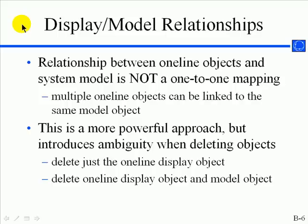Even within a single one-line diagram, the relationship between the objects you see — like buses and transmission lines — is not necessarily a one-to-one mapping to the underlying system model. You can have multiple objects on the one-line linked to a single object in the system model. This is a powerful approach, but it can introduce some ambiguity when deleting objects. The user can delete just the object on the display, or also select to delete the underlying model object as well.